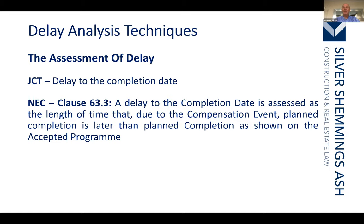However, under an NEC form the answer would have been different. Under the NEC you can program to complete early — for example 40 weeks — and when assessing the period of delay, it is the difference between the current program issued for acceptance taking account of the delay and the previous accepted program. The previous program showed 40 weeks, the current shows 50 weeks — you get a 10-week extension of time, notwithstanding that you are going to complete on the contractual completion date.